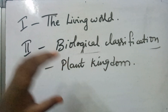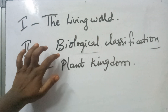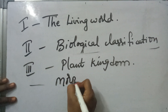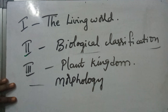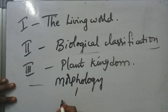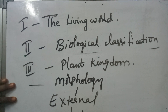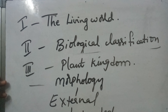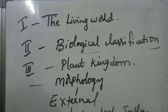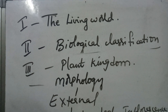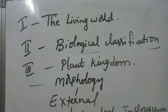So the first three chapters in the first year textbook are: Living World, Biological Classification, and Plant Kingdom. After that we go for morphology, anatomy, and reproduction. In morphology, we first discuss external morphology — root, stem, leaf, inflorescence, flower, fruit, and seed.